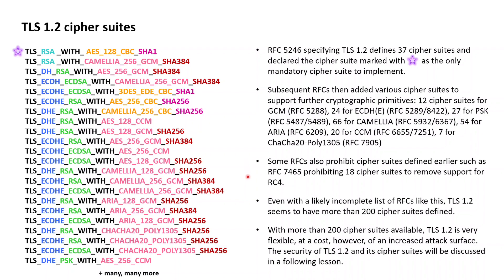Adding and subtracting all the cipher suites introduced and removed over the years, TLS 1.2 seems to know about just around 200 cipher suites, so the 22 cipher suites listed on the left are really just a very small subset of all the cipher suites available within TLS 1.2.